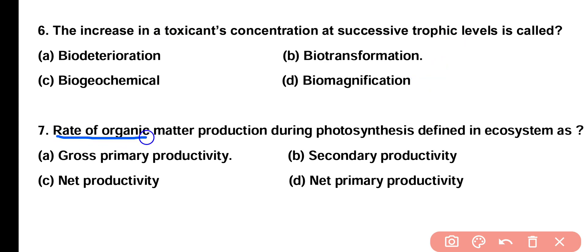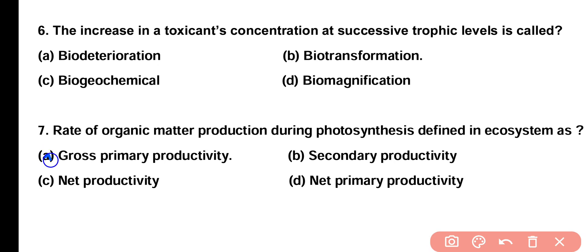Question number seven: the rate of organic matter produced during photosynthesis is defined in an ecosystem as gross primary productivity, secondary productivity, net productivity, or net primary productivity? Correct answer is option A. The rate of organic matter produced during photosynthesis is termed as gross primary productivity.